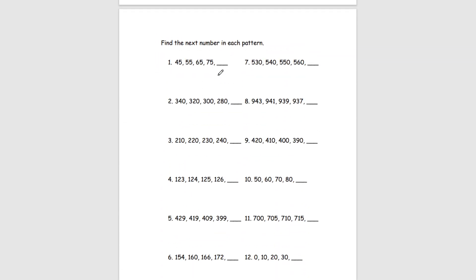For the next page, we need to find the next number in each pattern. Looking at number 1, we have 45, 55, 65, 75, blank. We find the common difference: 45 to 55 is plus 10, 55 to 65 is also plus 10, and 65 to 75 is also plus 10. So our pattern is plus 10. To get our answer, we do 75 plus 10 and get 85 as the next number in the pattern.